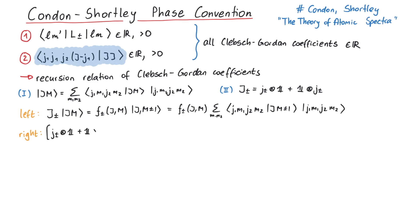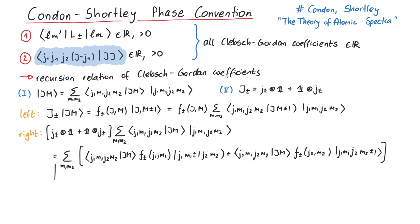On the right, the tensor product might look complicated, but this just tells us whether the ladder operator acts on j1 or j2. After shifting m1 and m2 by one in each term, we can pull out the state j1 m1, j2 m2 outside of the bracket.